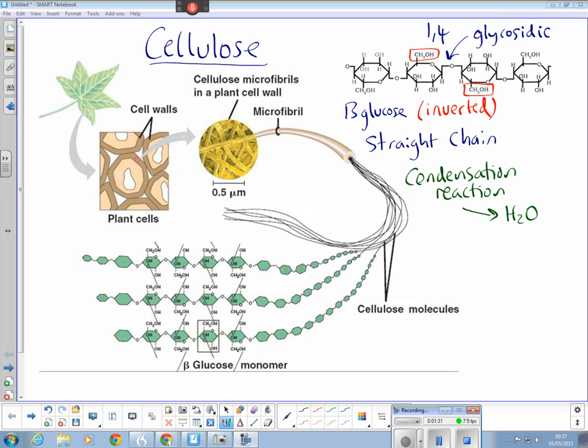This chain is unbranched, so we can just call it a straight chain. The chains can be held together with hydrogen bonds, which can be seen down here on this bottom figure.